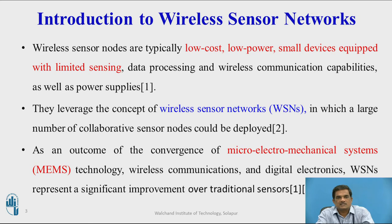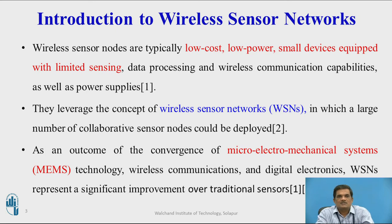Before discussing the architecture of wireless sensor networks and its components and applications, let us begin with a definition of wireless sensor networks. Wireless sensor networks are self-configured, infrastructure-less networks in which sensor nodes remotely sense physical conditions such as temperature, pressure, wind, and other molecules across a remote sensing area, and forward that information to the central control authority for extracting knowledge.